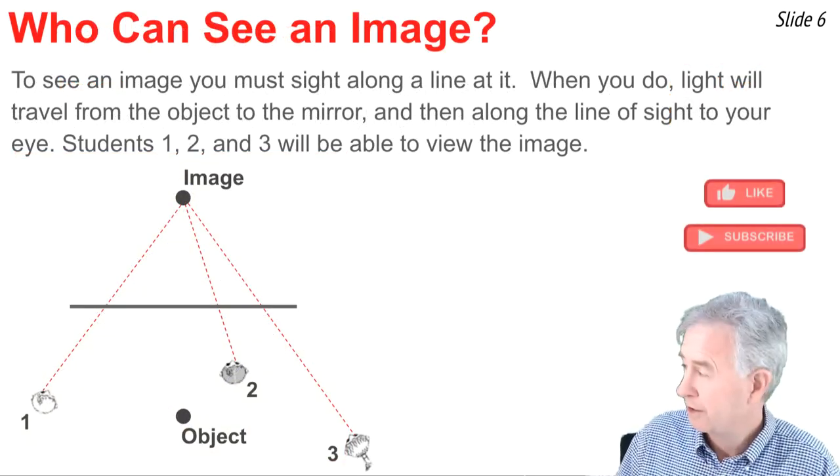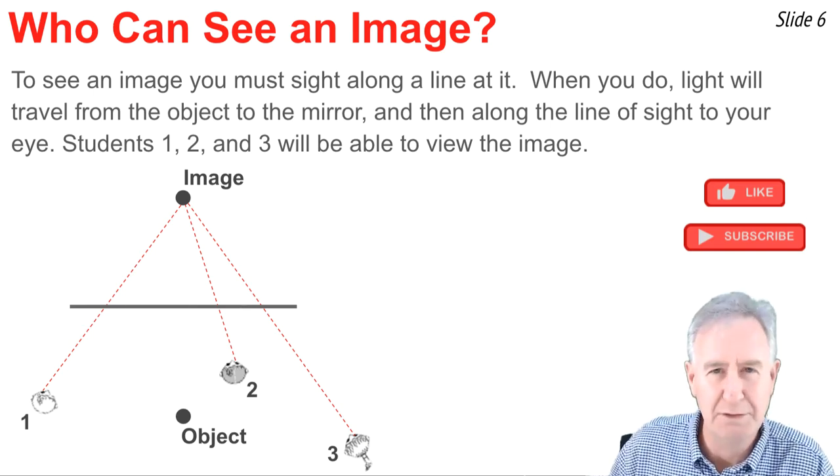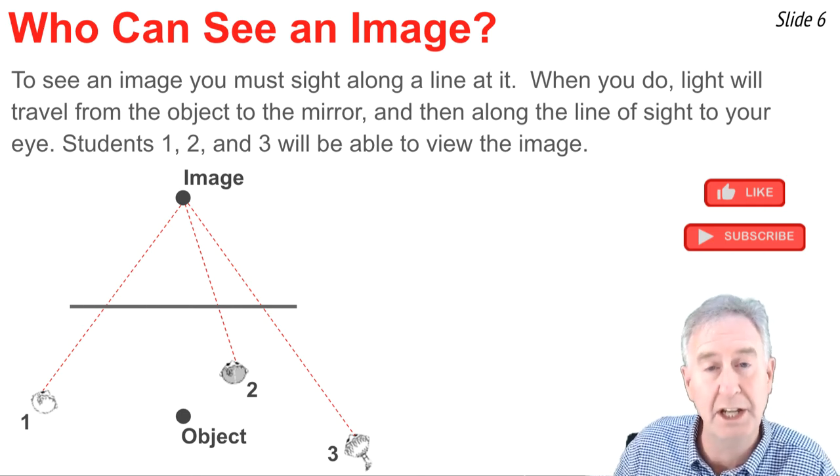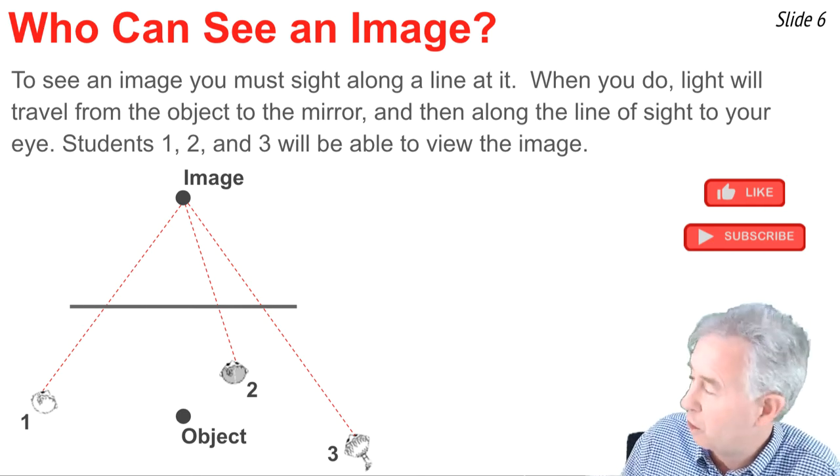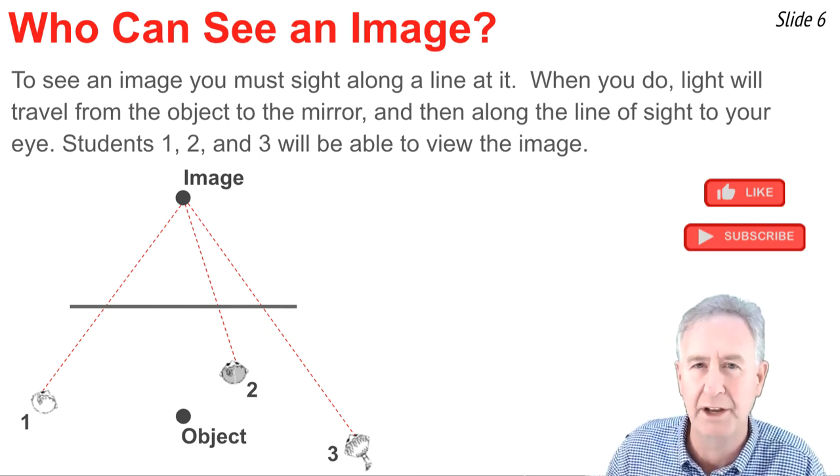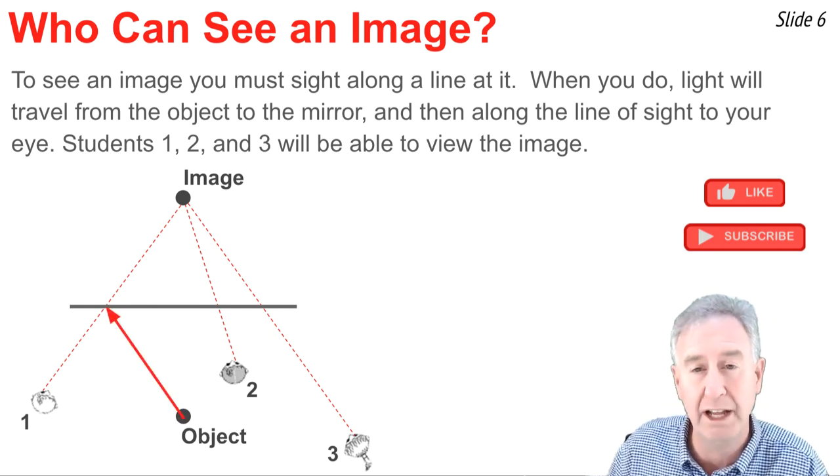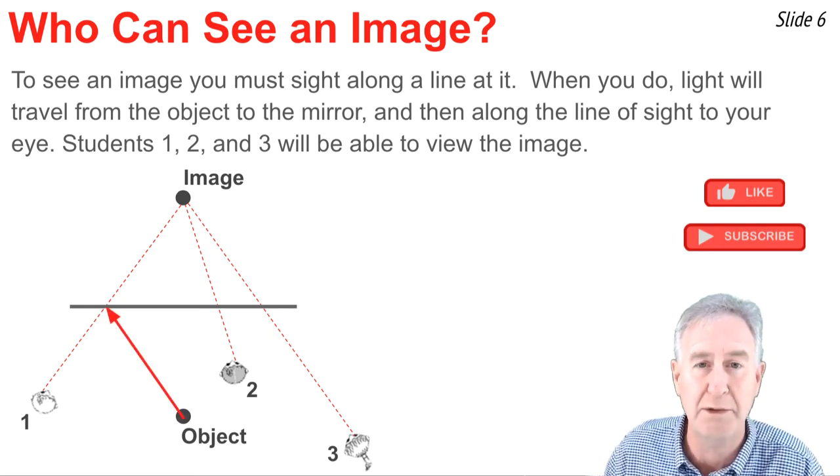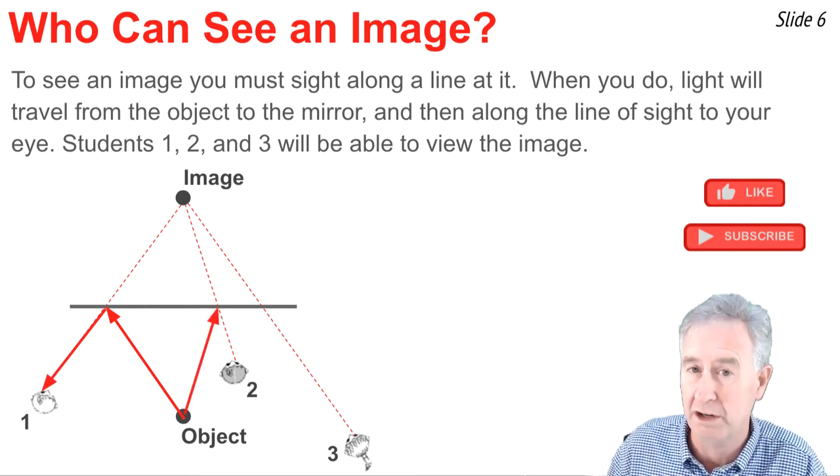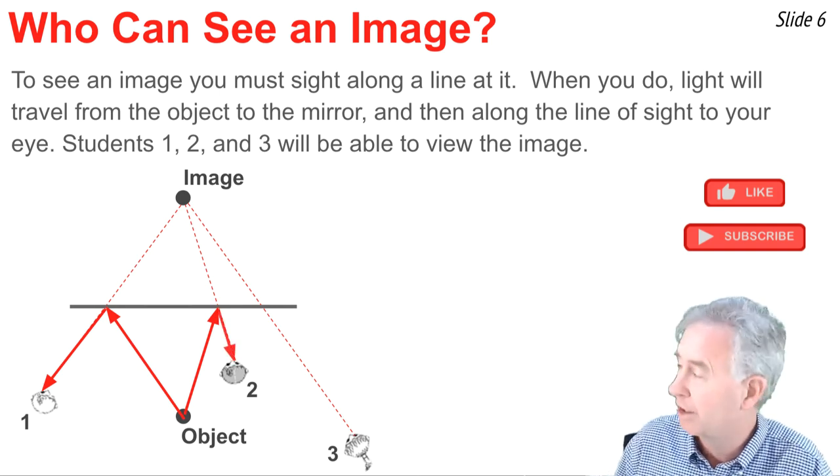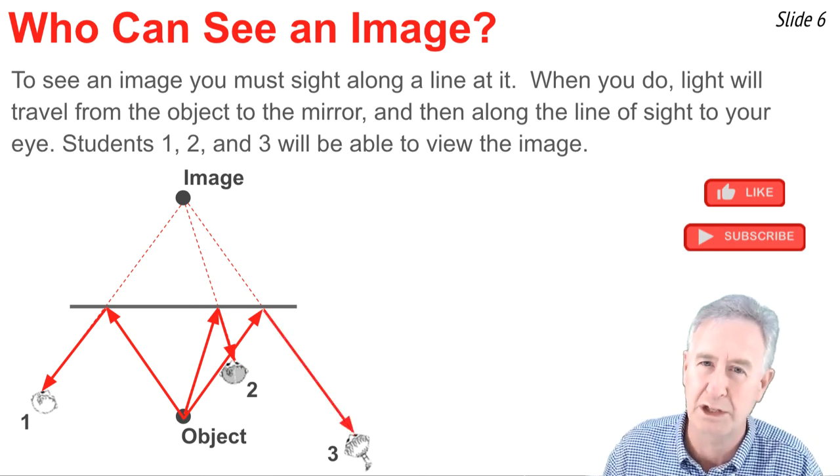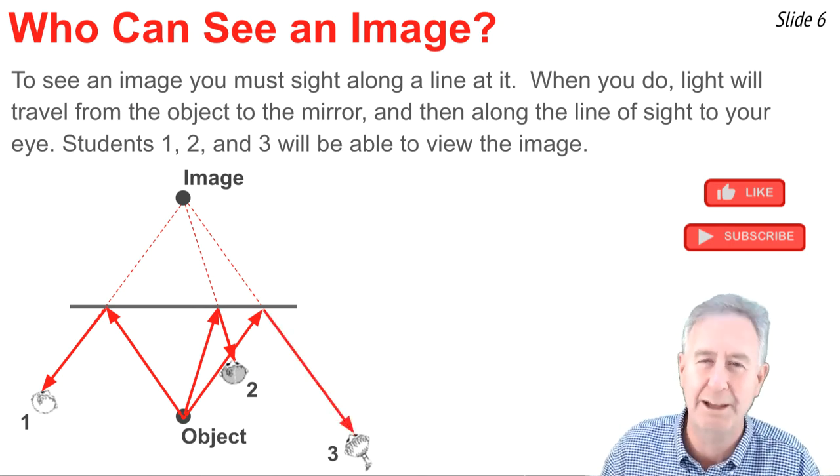Here we have three students, an object, a mirror, and of course an image is formed, and we see that there. In order for these three students to see the image, they must sight along a line at the image location. And when they do, a ray of light will come along that line to their eye. For instance, if we consider student one, when looking along this line of sight, a ray of light coming from the object will bounce off the mirror and reflect to student one's eye. For student two, we can say the same thing. A ray of light starting from the object reflects off the mirror to student two's eye. And the same is true for student three. In order to see an object, you must look along a line of sight at the image of that object.